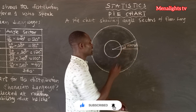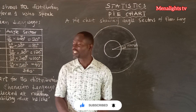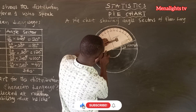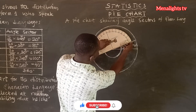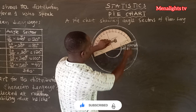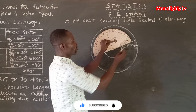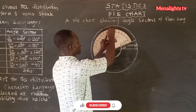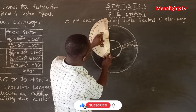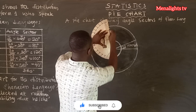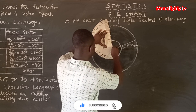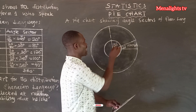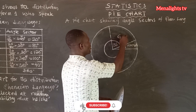The angle sector for Nzema is 20 degrees. Then after that we have Ga, which is 80 degrees. In the same way, we place the protractor at the center and the baseline on the line, then locate 80 degrees counting from 0: 10, 20, 30, 40, 50, 60, 70, 80. We locate 80 degrees and draw the radius. The angle sector here is 80 degrees and that is for Ga.